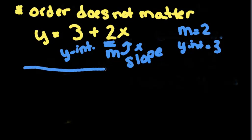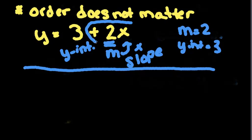So the order in which it is written, it does not always going to be written in y equals mx plus b. It could be written in y equals b plus mx form. So you have to really look at what has the x next to it in order to figure out which one is the slope.